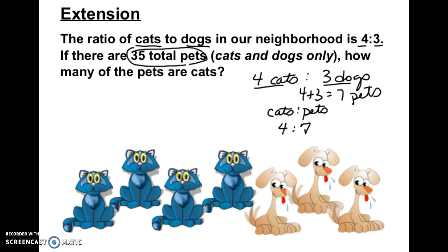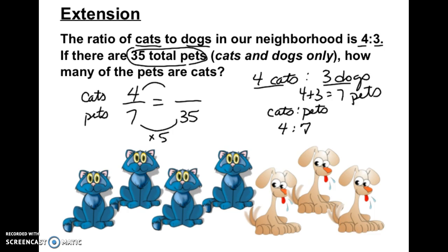So cats to pets is 4 to 7. I want to find what that equals out of 35. I can scale this up: 7 times 5 is 35, and 4 times 5 is 20. So 20 to 35 is equivalent to 4 to 7, meaning there are 20 cats. And that also means there have to be 15 dogs.